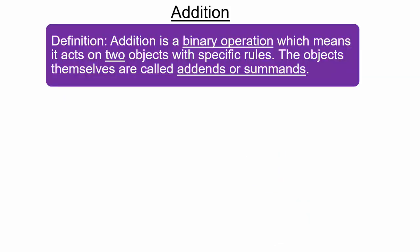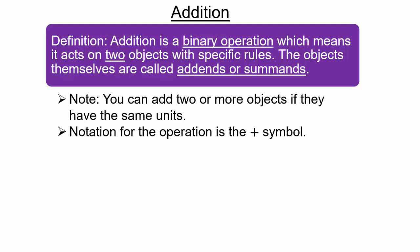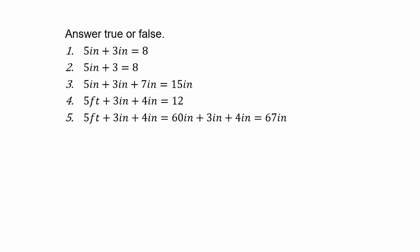So what is addition? Addition is a binary operation. Binary means it operates on two objects with specific rules. The objects themselves are called addends or summands. So if I write 2 plus 3, then 2 and 3 are the addends. Note that you can add two or more objects if they have the same unit. The notation for addition is the plus sign.